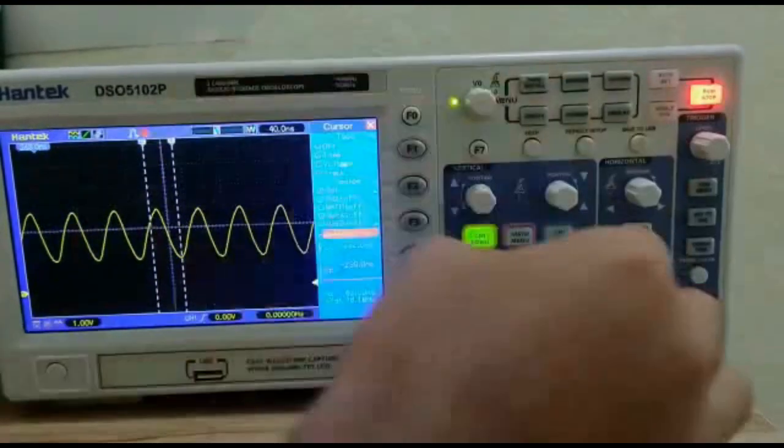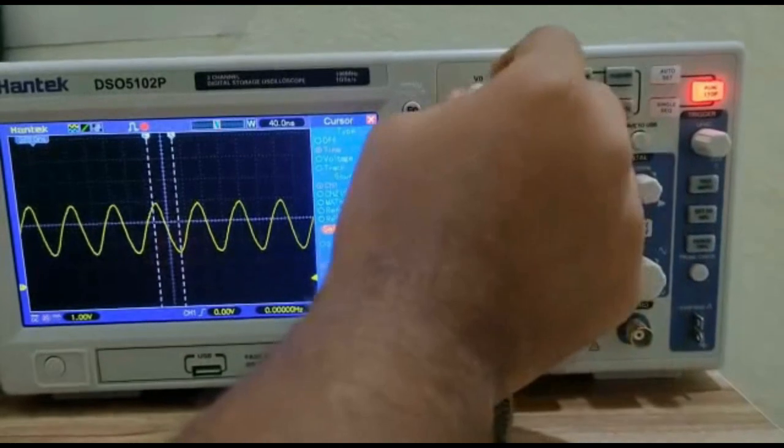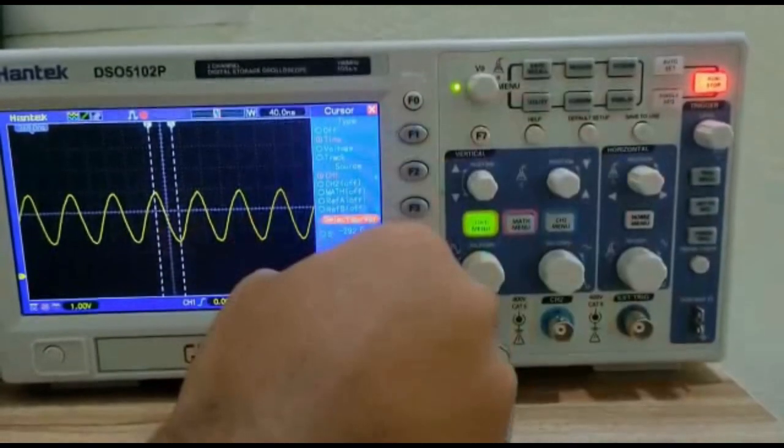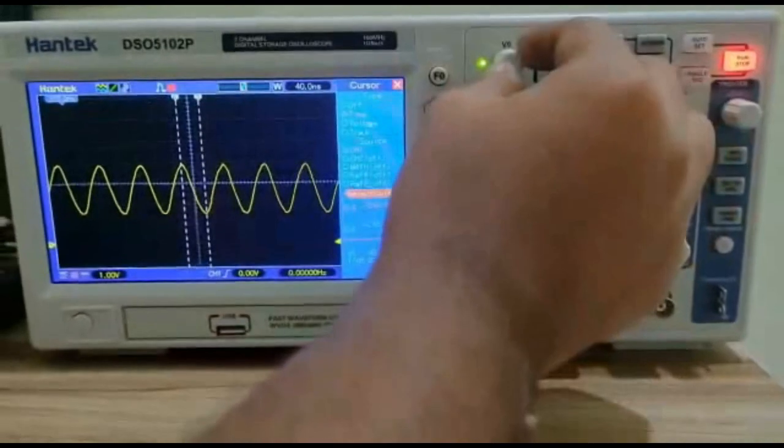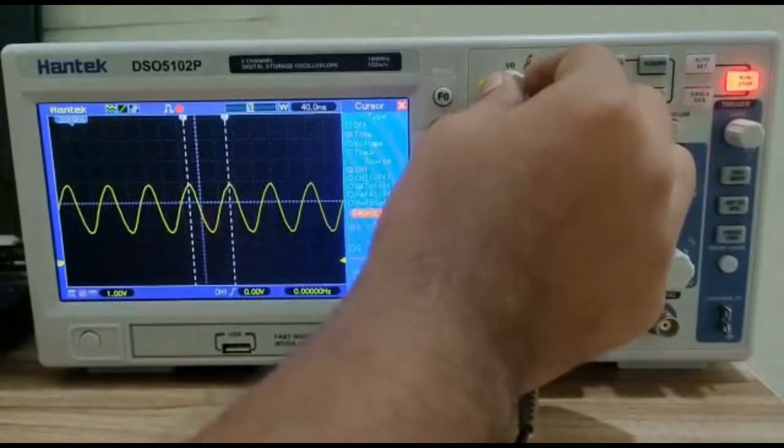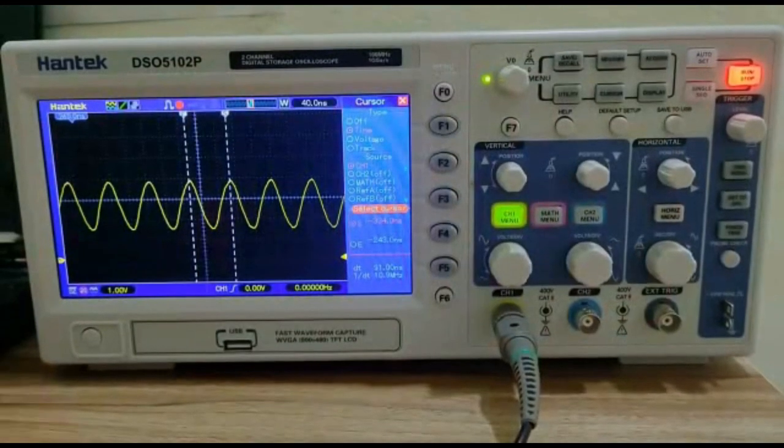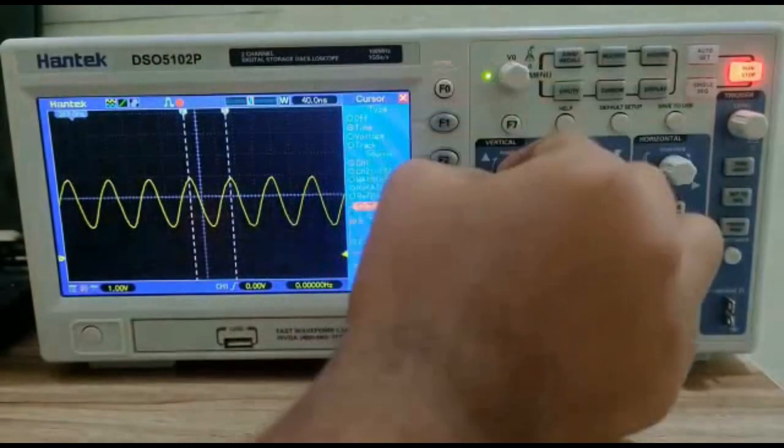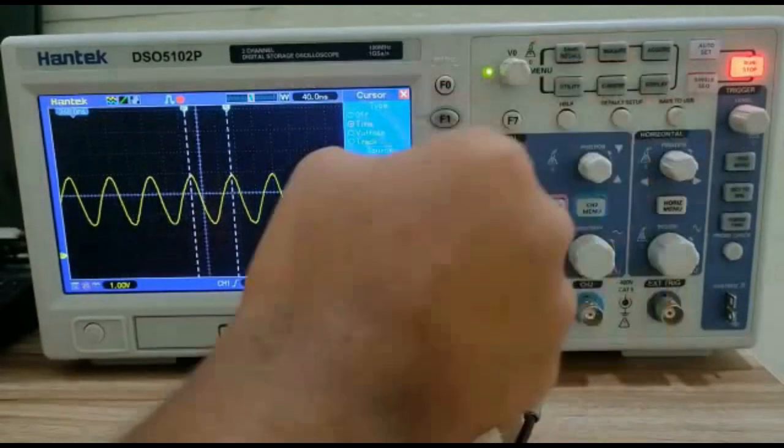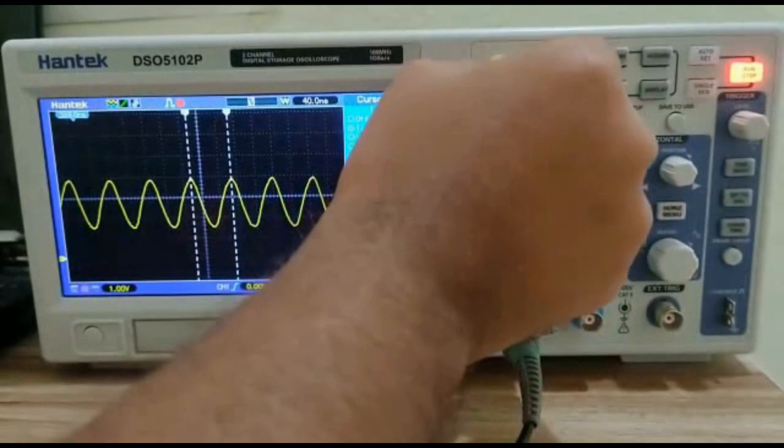I am increasing the time period and now I have stopped to measure the signal. Now, I am keeping one of the measurement time at one peak and another at the second. Now, I have measured it and you can see that the frequency is coming around 10 MHz. I am adjusting it, peak to peak adjustment.